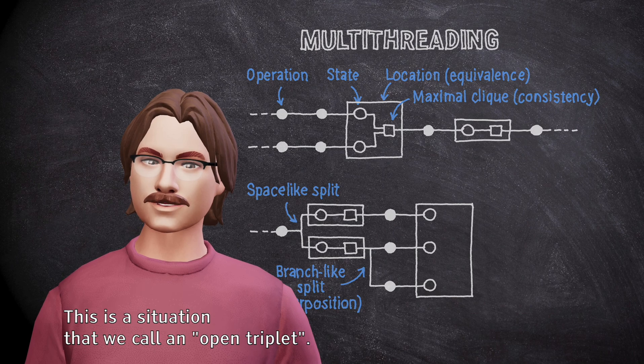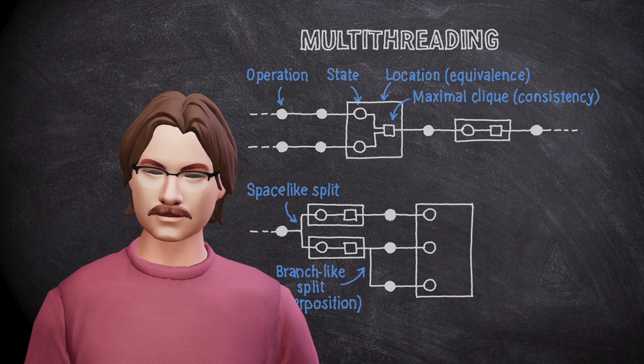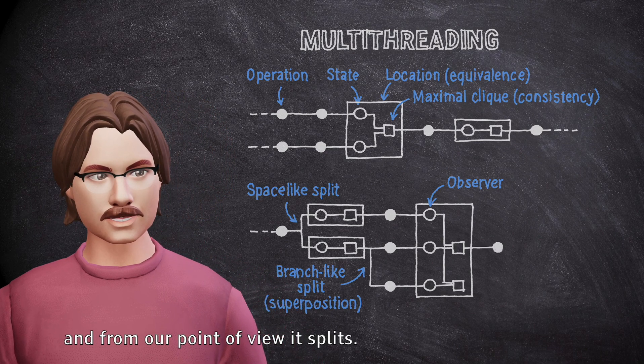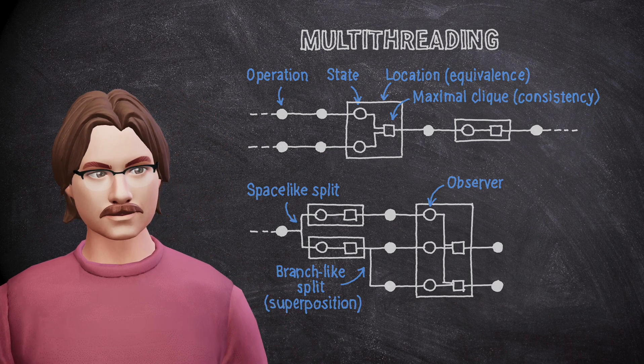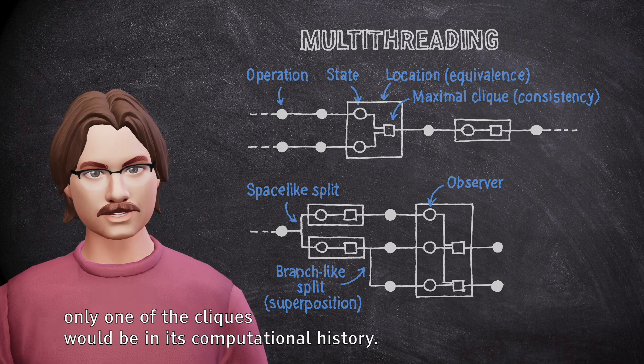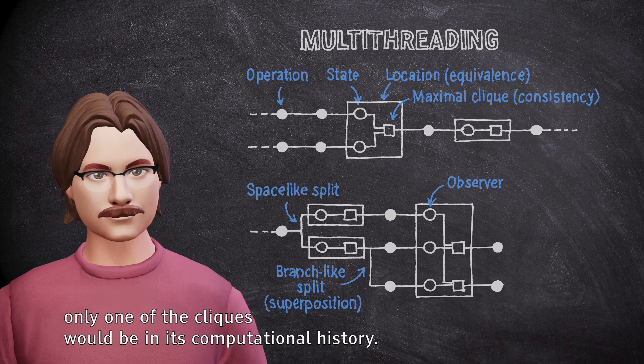This is a situation that we call an open triplet. The thread marked as observer has two possible paths, and from our point of view it splits. But if we were to ask the observer after the fact, only one of the cliques would be in its computational history.